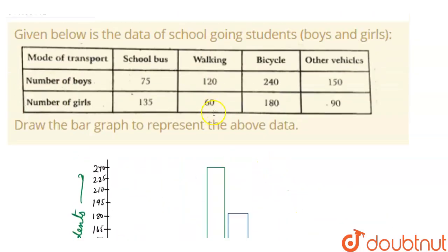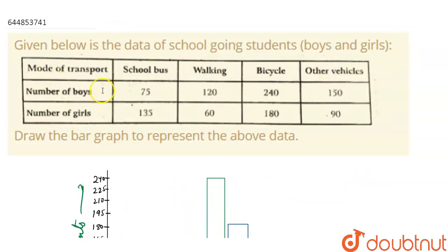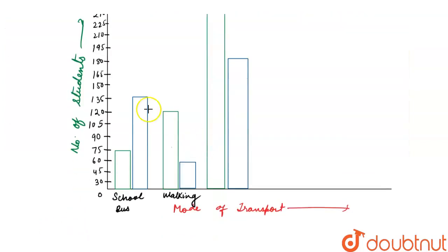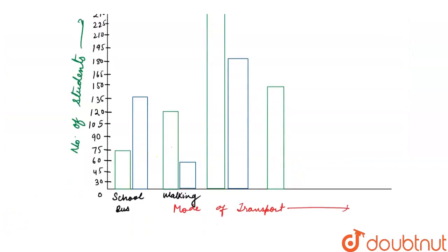So we have made bars for school bus, walking, and bicycle. Now let's make for other vehicles. Number of boys is 150 and number of girls is 90. So the green bar is at 150 and the blue bar is at 90. Let's label this section as bicycle, and this as other vehicles.